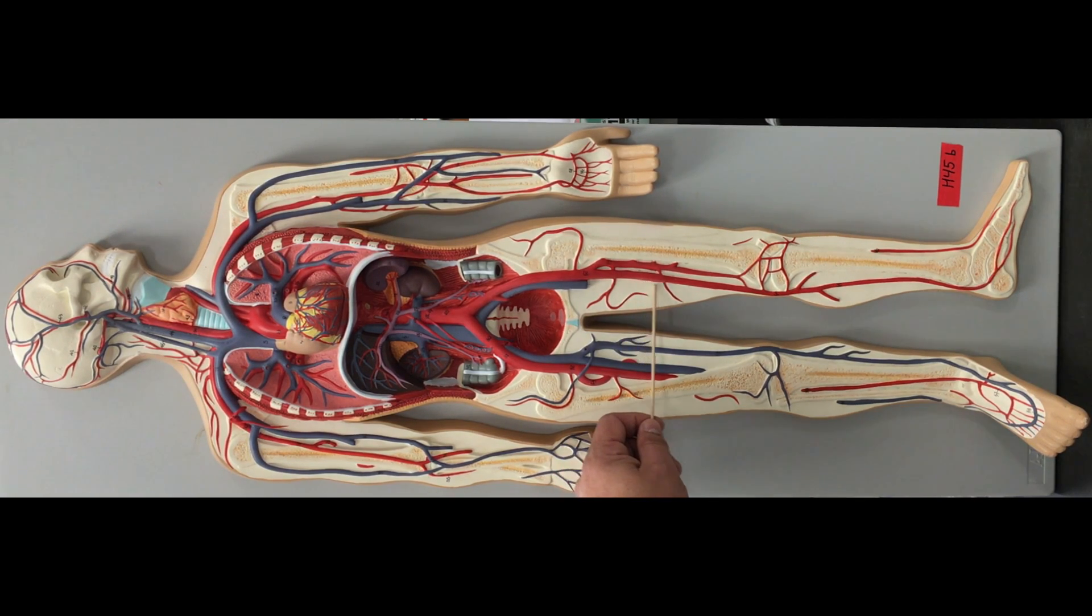We're going to look on the left side now. As we continue down, we go to the posterior aspect of the knee. This is our popliteal artery. We're going to branch again, going in front of the tibia and behind the tibia.